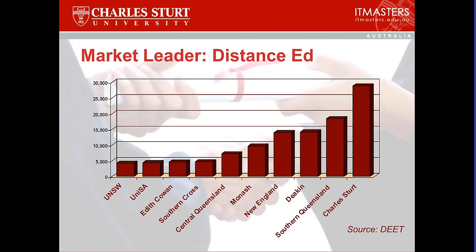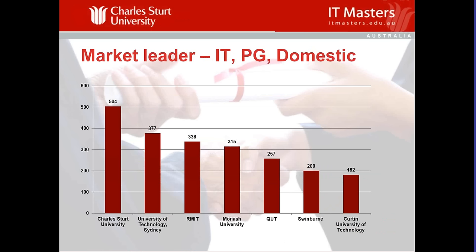CSU is a distance education program — all online, meant to be done part-time. You can complete our master's programs in around two years studying part-time. When lined up against other universities in terms of postgraduate IT and distance education, we're well ahead of the pack, ahead of our nearest competitor which is Southern Queensland. Distance education is done very well here — webinars like this are a key feature, where each week you log in and participate in an online interactive lecture.